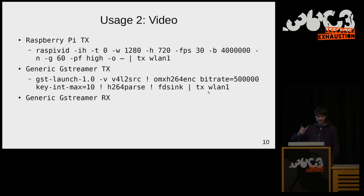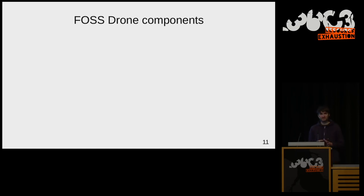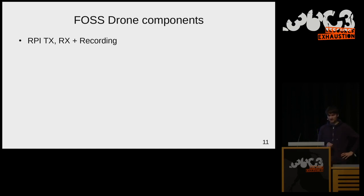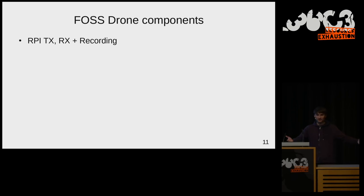On the receiving end, use the RX program piped into a GStreamer pipeline to display the image on screen. I also developed a Raspberry Pi image you can burn onto two SD cards — put them in your RX and TX Raspberry Pis, switch on, and you have a video link running. The RX side also supports recording: add a USB stick to the Raspberry Pi and it automatically records the video.